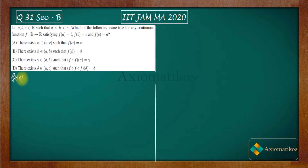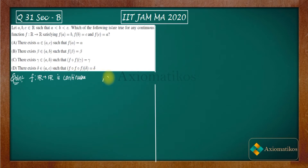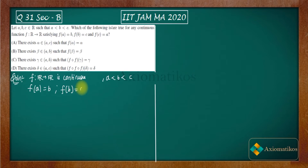What is given to us: F from R to R is continuous. Second, A is less than B is less than C. And third, F(A) = B, F(B) = C, and F(C) = A. These are the three given conditions.